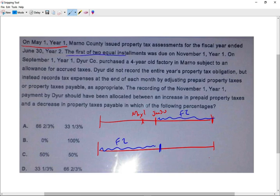The first of two equal installments was due on November 1st year one. Simply put, the taxpayer will have to make two payments. The first one was on November 1st and another one six months later, I would say two months before year end. So this is the second payment, which we're not concerned about.